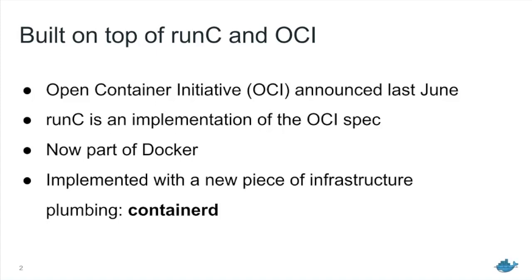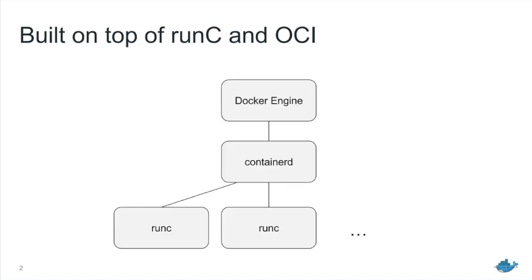ContainerD is a really simple daemon that sits on top of RunC for orchestrating multiple RunC instances. You can imagine RunC as the single container — it's just a really simple binary that runs a container given an OCI image, and runs the container as its child process. ContainerD is a whole bunch of other functionality that was inside Docker that we've yanked out into a separate piece of plumbing. It's essentially a CRUD interface around RunC containers — a daemon that has an API for starting, stopping, creating, and removing containers. Before, all of this was locked up inside the Docker engine daemon, but now the Docker engine daemon talks to containerD, and containerD starts and orchestrates RunC containers.